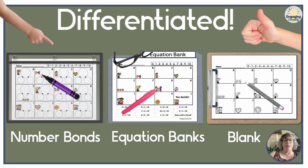Differentiation is made easy with three different types of task card recording sheets. On the left, we have number bonds. In the middle, I have equation banks for addition and subtraction. And then on the far right, we see the blank grid.